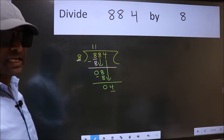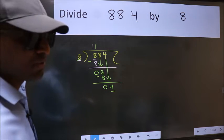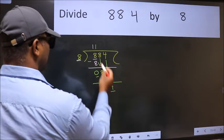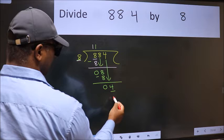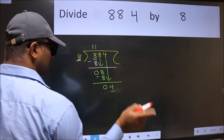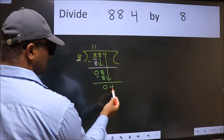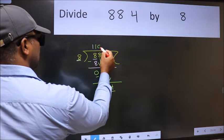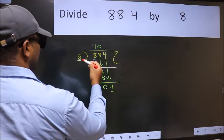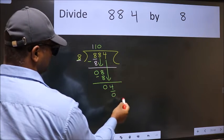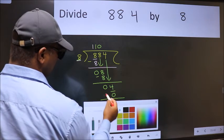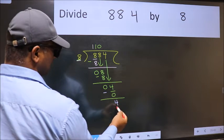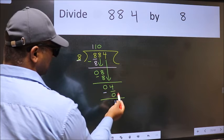Instead of that, what we should think of doing is: which number should we take here? If I take 1, we will get 8. But 8 is larger than 4. So what we do is, we take 0. 8 into 0 is 0. Now we subtract. We get 4. Over here, we did not bring any number down.